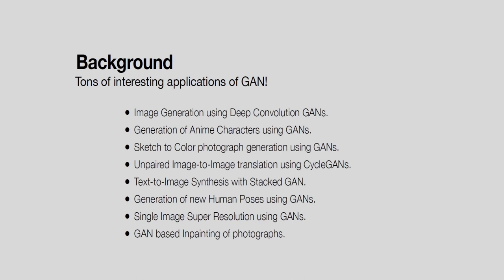Some interesting applications of GAN include: image generation using deep convolutional GAN, generation of enemy characters using adversarial networks, sketching to color photograph generation, unpaired image-to-image translation using CycleGAN, text-to-image synthesis by StackGAN, generation of new human poses by GANs, single image super-resolution to improve image resolution, and GAN-based inpainting of photographs.